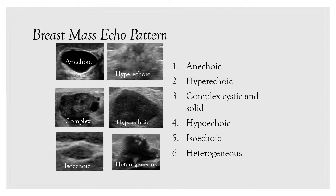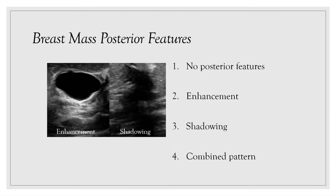The breast mass echo pattern has six descriptors, relative to the subcutaneous adipose tissue: hyperechoic — which we'll focus on today — anechoic, complex cystic and solid, hypoechoic, isoechoic, and heterogeneous. Breast masses also have posterior features: posterior acoustic enhancement, often seen with benign breast cysts but also homogeneous solid masses; posterior acoustic shadowing, sometimes seen with more suspicious masses; combined echo pattern; or no posterior features.